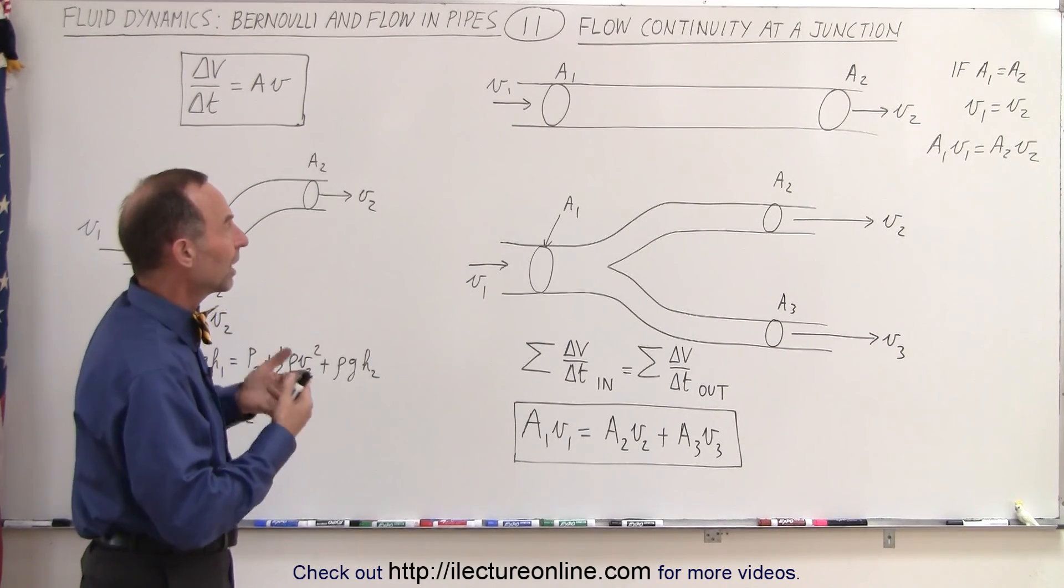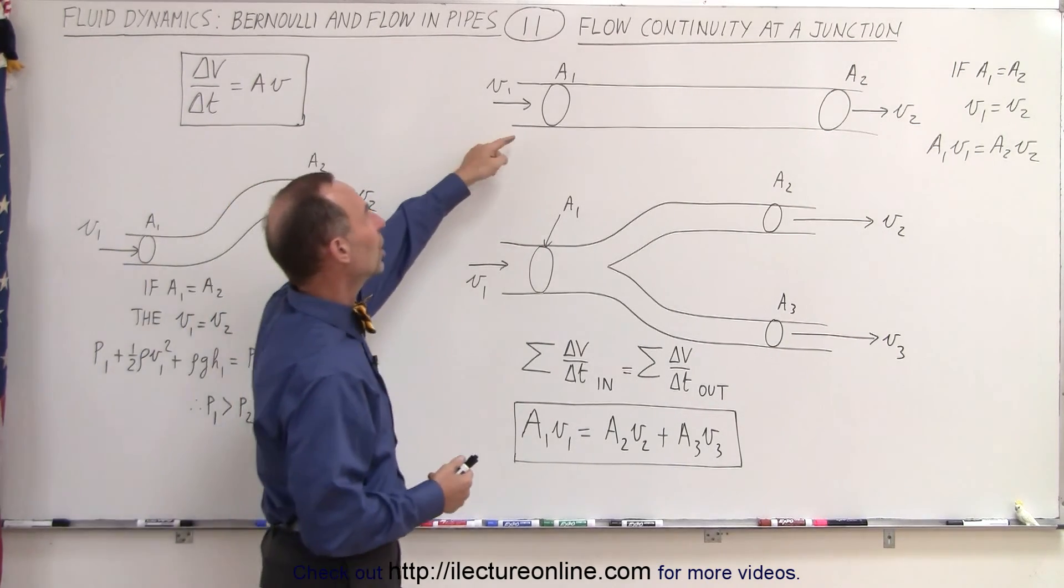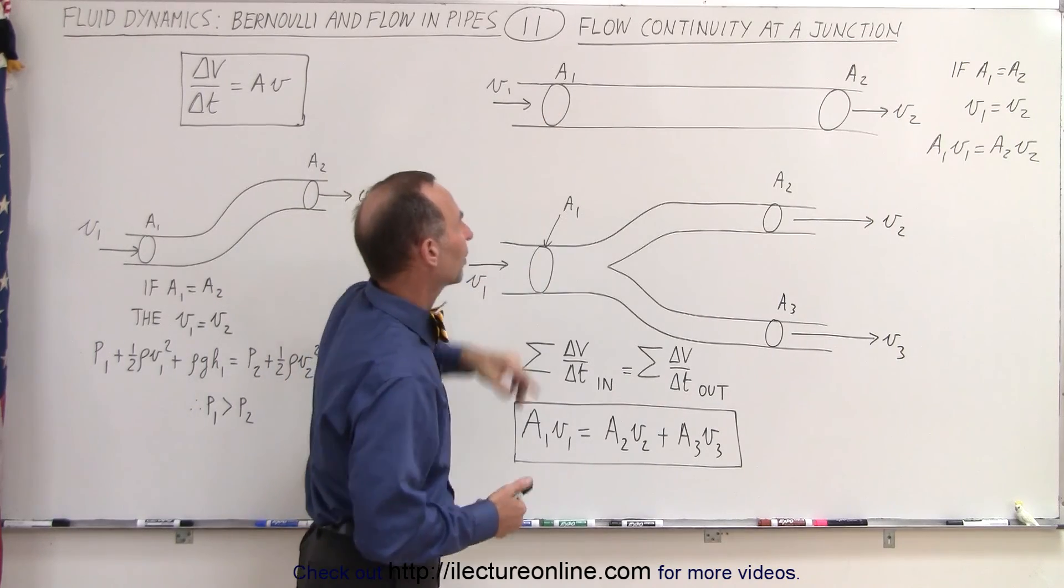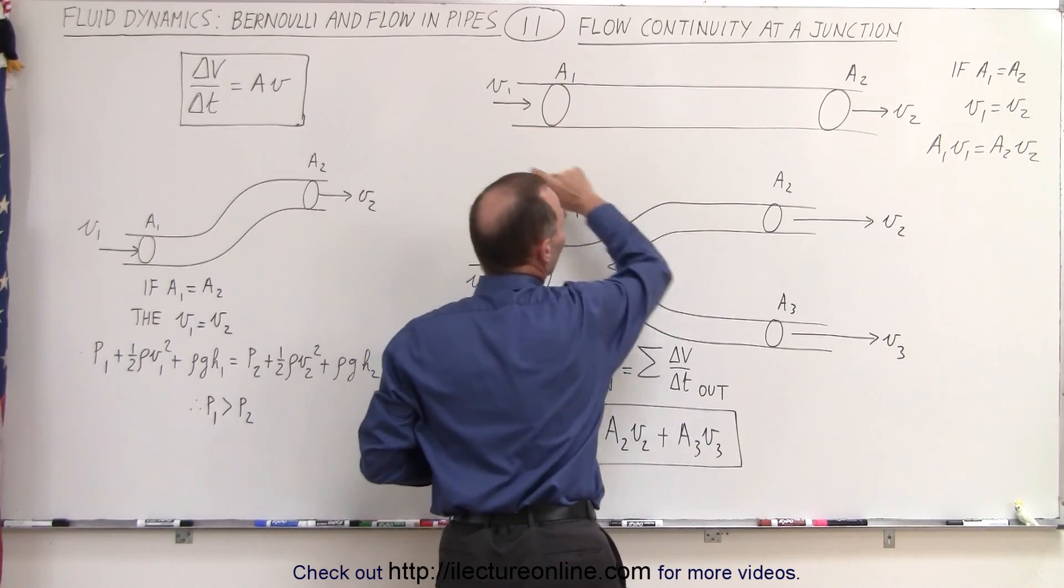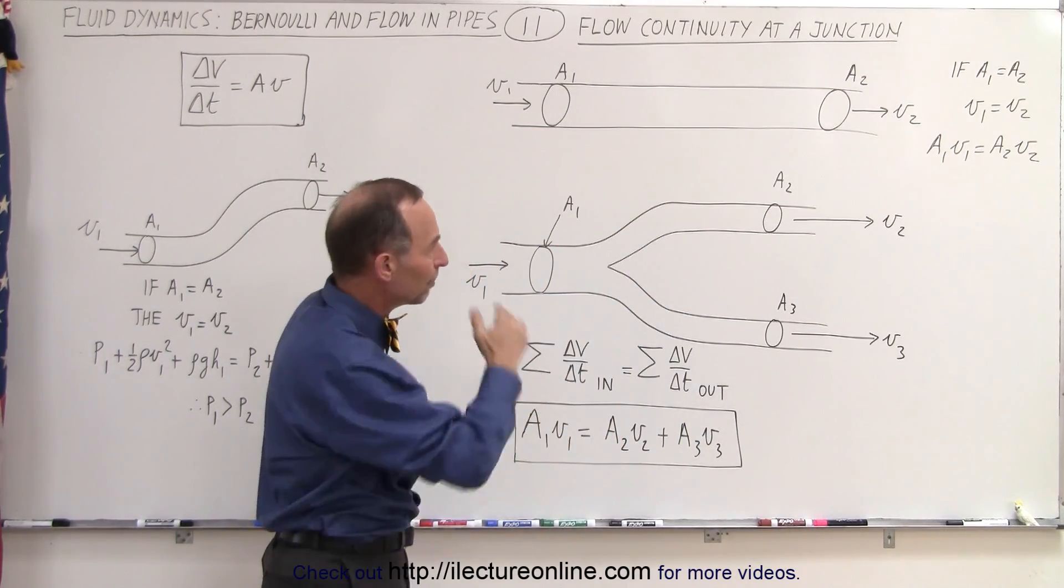Well, first let's explore the idea that the pipe doesn't change. Here we have a cross-sectional area A1 and there we have a cross-sectional area A2, velocity V1 and velocity V2. So nothing changes in the pipe,